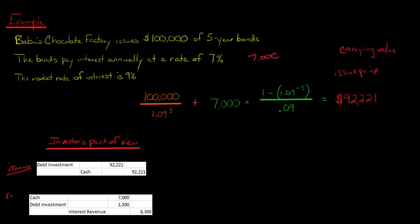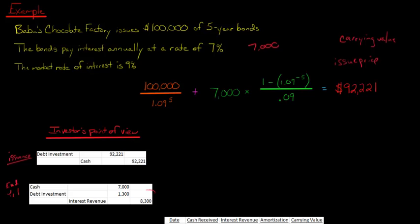Now, after the first year, so this here is at issuance when you actually buy the bonds. But then at the end of year one, you now are receiving some interest. And you actually receive $7,000 of interest. So we've got a debit to cash or interest receivable of $7,000. But our interest revenue is going to be $8,300. And so we're going to have this plug of debt investment for $1,300. And you might be wondering, how the heck did you come up with $8,300?